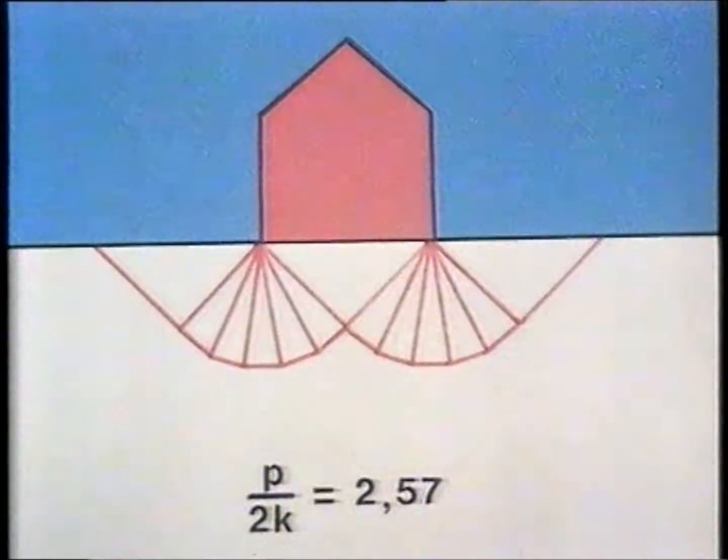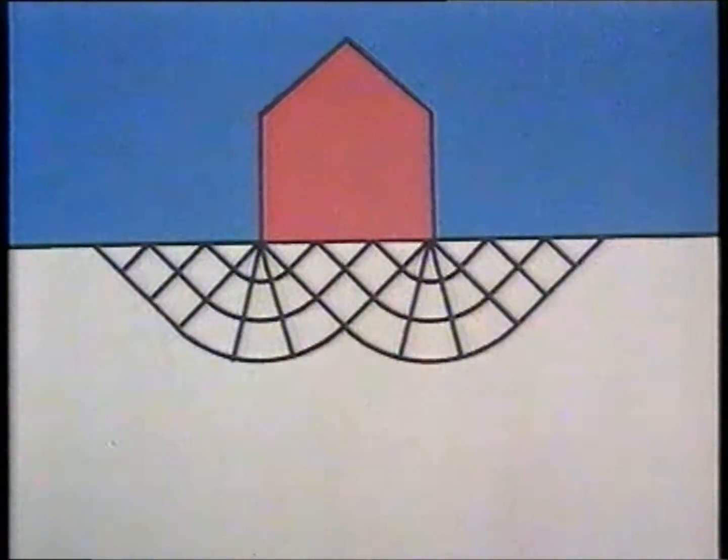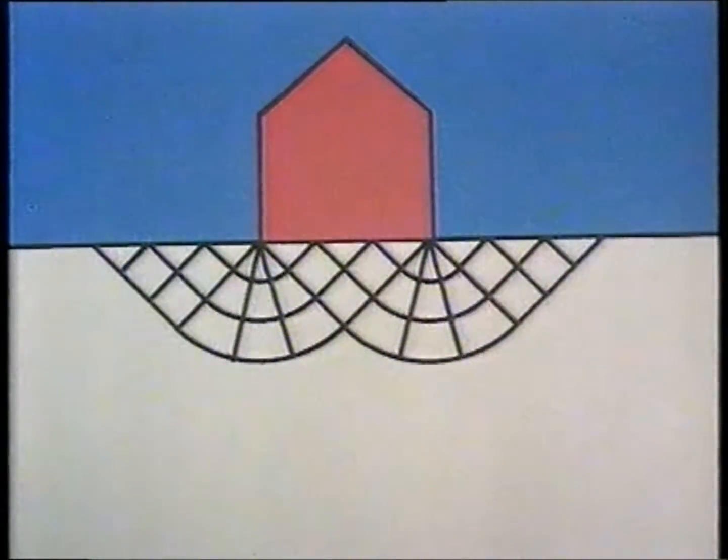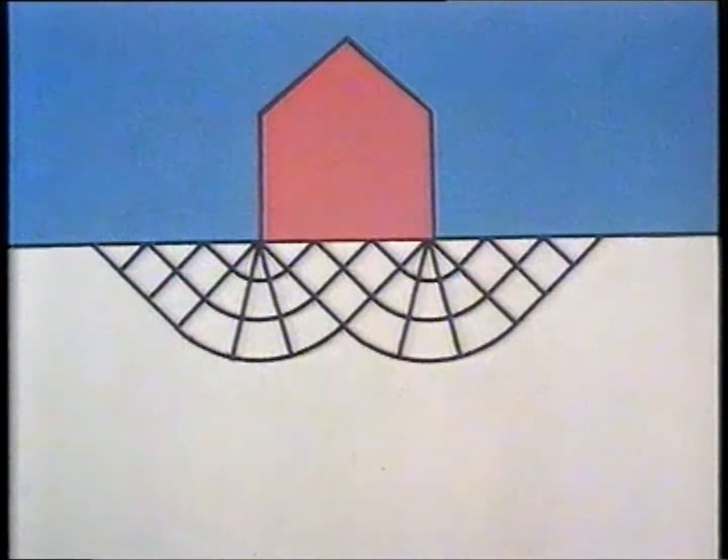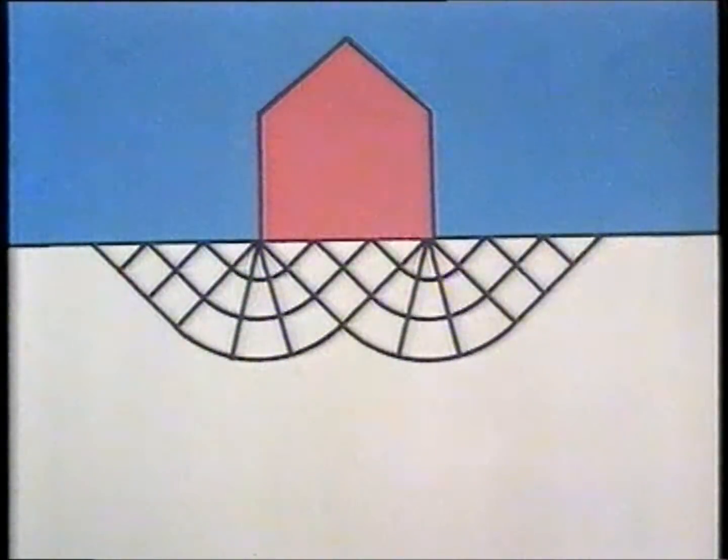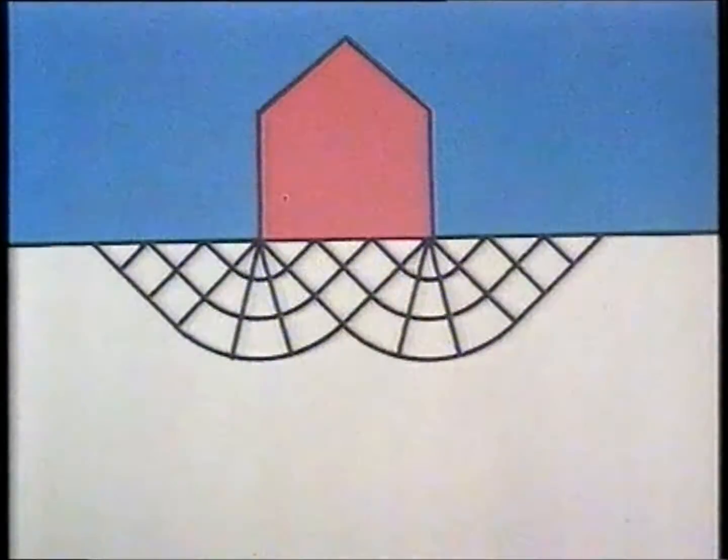Slip line theory is in itself a widely used analytical method for cases of plane strain deformation. These lines take the direction of the maximum shear stresses and there are two orthogonal sets of lines. Shown here by red and black lines.